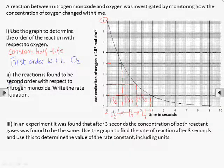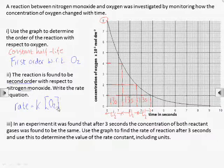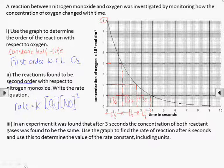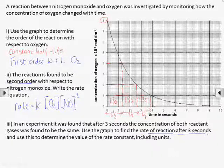Once we know the orders for each of the reactants, we can write the rate equation. Rate equals constant times concentration of oxygen, because it's first order, times concentration of nitrogen monoxide squared, because it's second order.